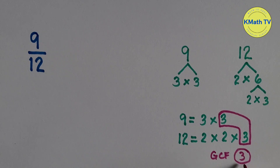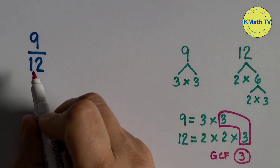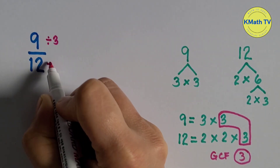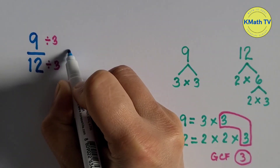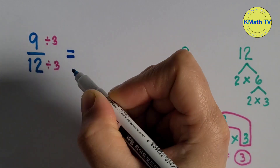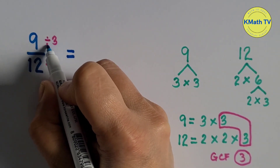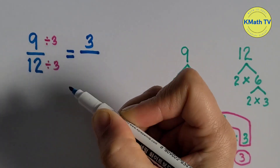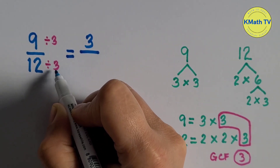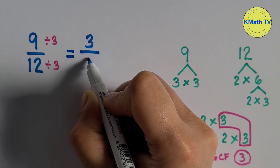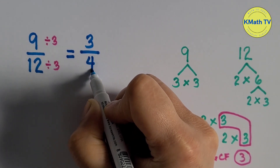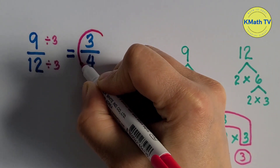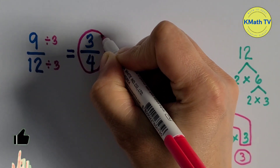Now let's use the GCF to reduce the fraction to lowest term. Let's divide the numerator and the denominator by 3. 9 divided by 3 equals 3. 12 divided by 3 equals 4. The lowest term of 9 twelfths is 3 fourths.